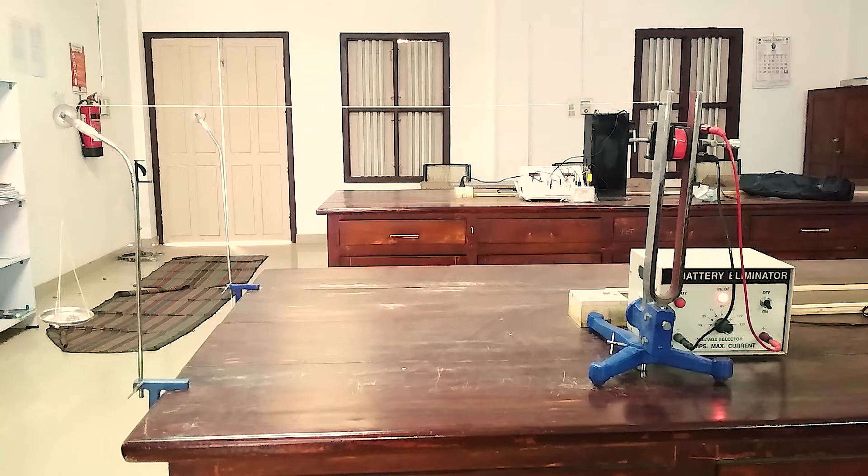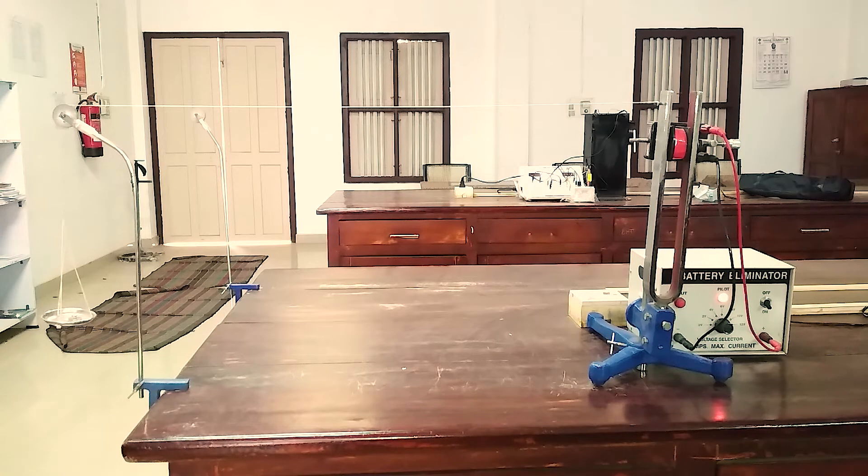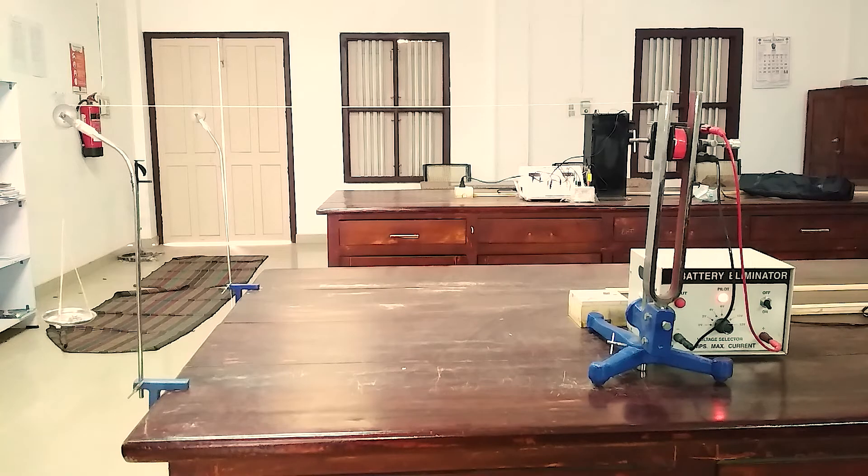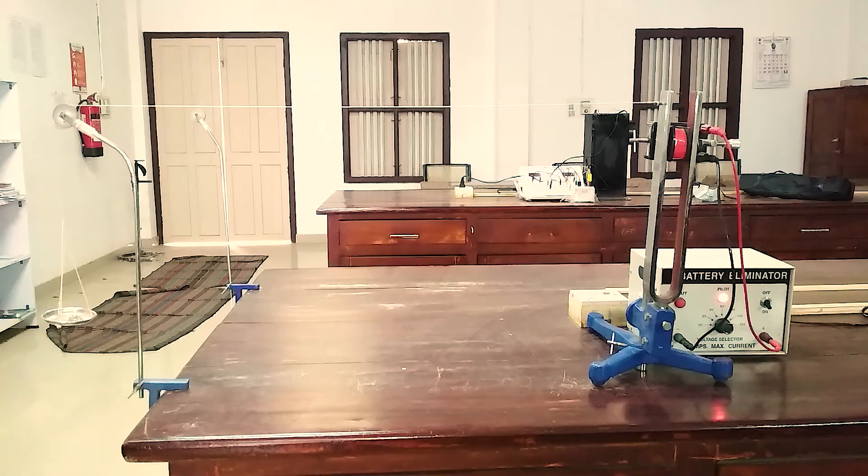A string can be set in vibrations by means of an electrically maintained tuning fork, thereby producing stationary waves due to the reflection of waves at the pulley. The loops are formed from the end of the pulley where it touches the pulley to the position where it is fixed to the prong of the tuning fork.